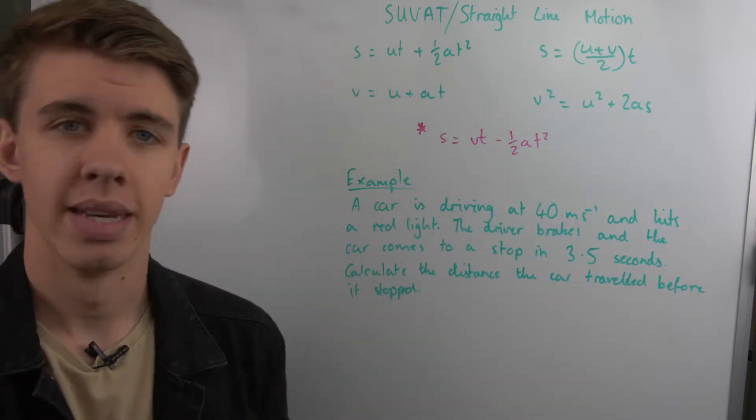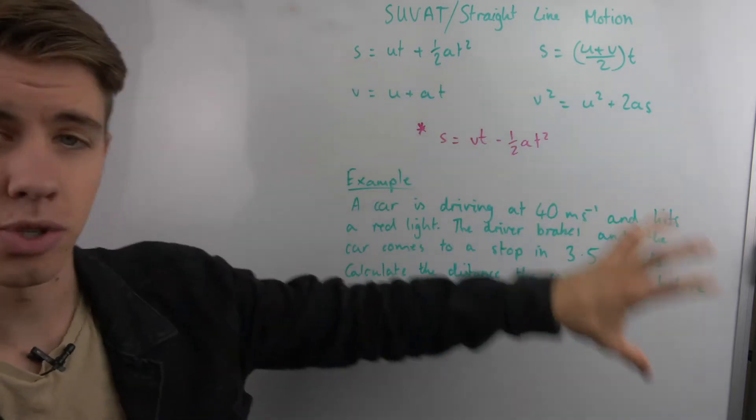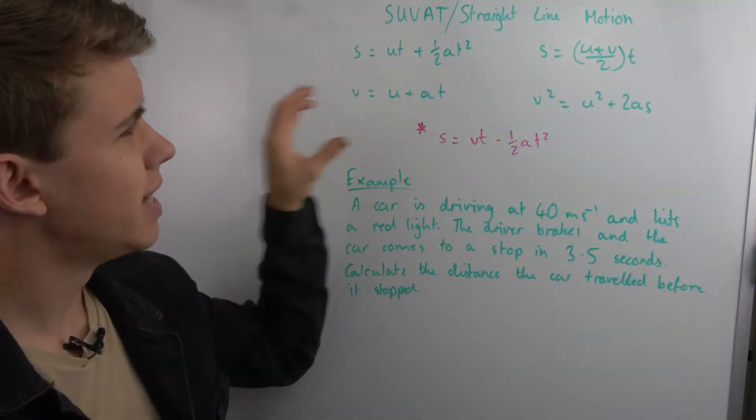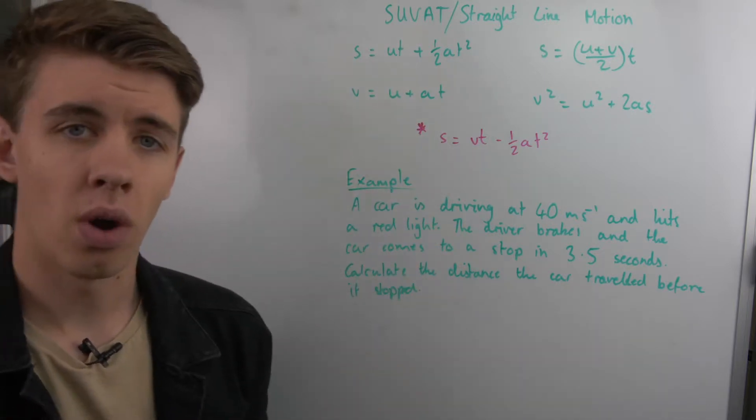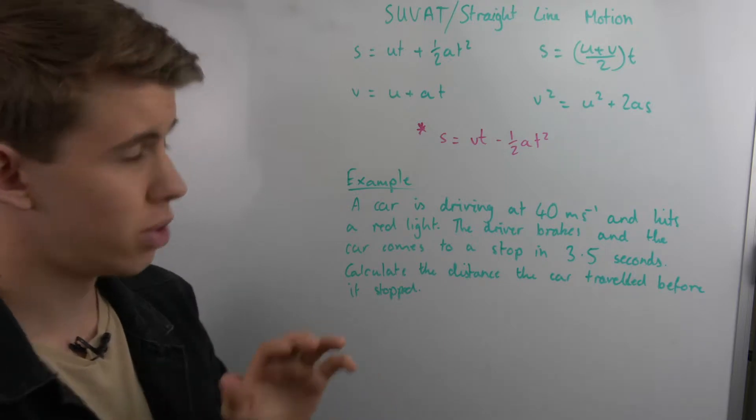You want all of these values to be in your SI units. There are five SUVAT equations. And the way these equations work are that in each of the equations, you have one of the other things missing.